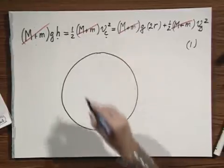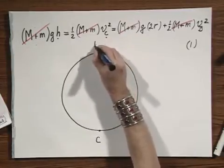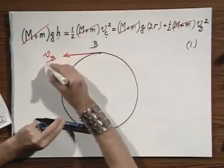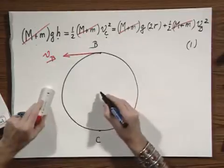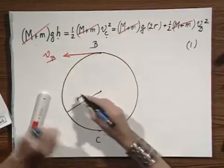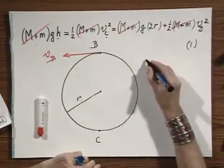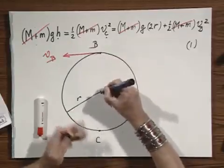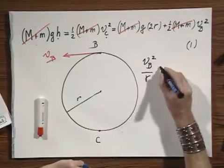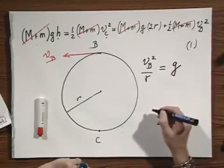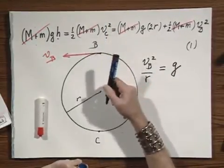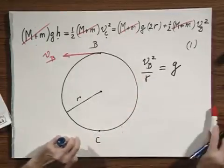Let this be that circle. This is point C and this is point B, and you have here this velocity V of B. What is required for this object to stay in orbit, to make this curvature with this tangential velocity VB, is that there is a centripetal acceleration which is downwards. That centripetal acceleration equals VB squared divided by R. Let us now assume that this is exactly equal to G, so gravity provides precisely the necessary centripetal acceleration toward the center of the circle.